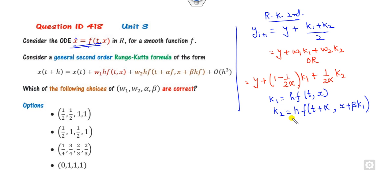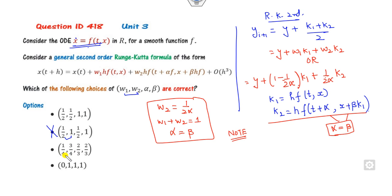Now remember this shortcut: W2 is 1/(2α), and W1 plus W2 equals 1. From here, the necessary condition is alpha must equal beta. Now check these four options to see which one is not satisfied. The sum must be 1, so the first two pairs work. This option is not satisfied, but these are satisfied.